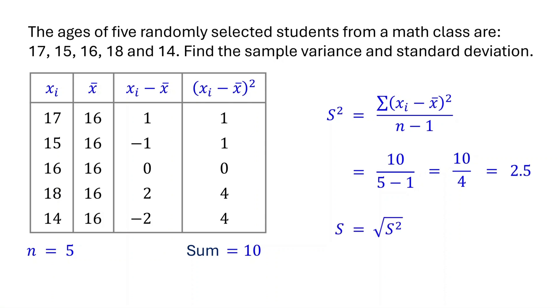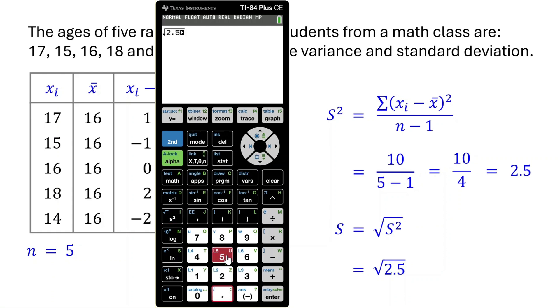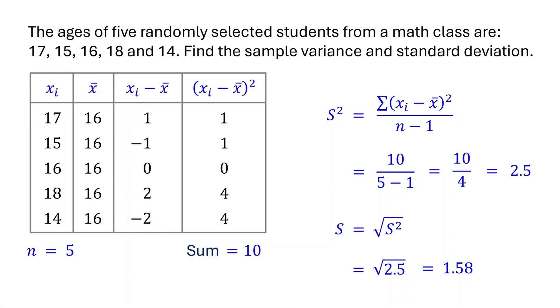Now, to find the sample standard deviation, just take the square root of the sample variance. The square root of 2.5 is about 1.58 when rounded to the nearest hundredth. So the sample standard deviation is 1.58.